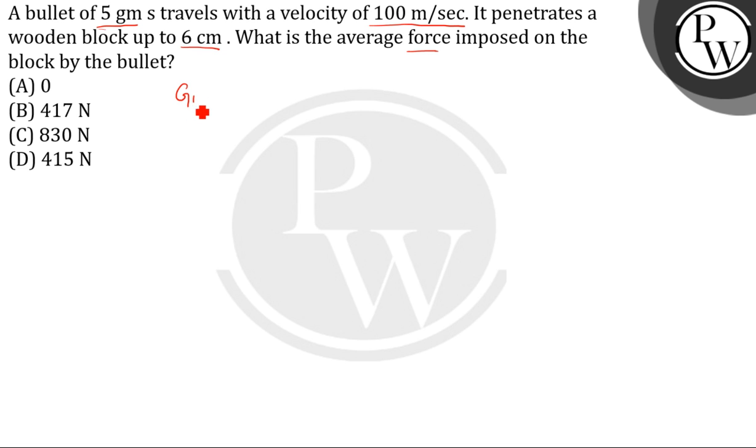We are given the mass of the bullet, which is 5 grams, that is 5 × 10⁻³ kg. Initial velocity u is 100 m/s. Final velocity v is 0, as it comes to rest. And distance s is 6 cm, which converts to 0.06 m.